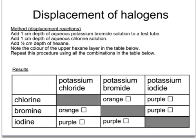What we then do is take a one centimetre depth of one of the halide solutions and add a one centimetre depth of a different halogen, both dissolved in water, mix them together and shake them. We also have a small layer of hexane on the surface so that it can detect any halogen which is in solution. We look at the colour of that hexane layer on the top, and from that we work out whether a reaction has taken place.